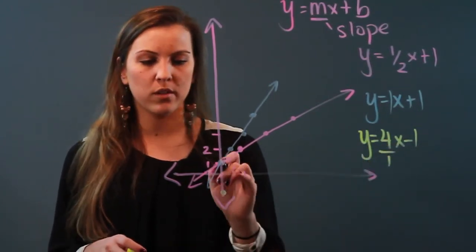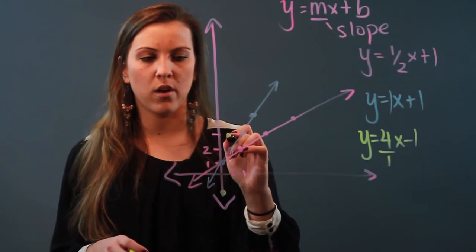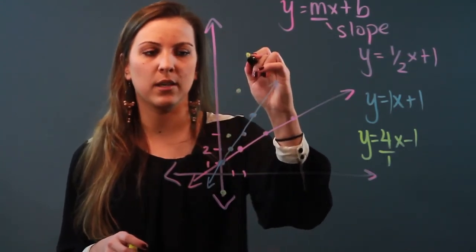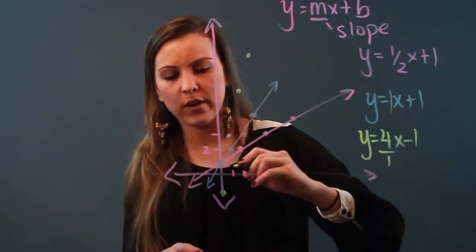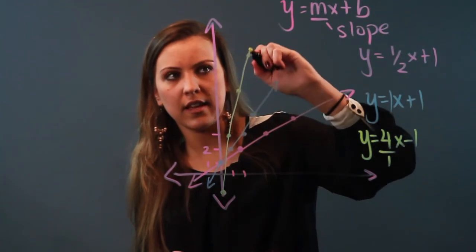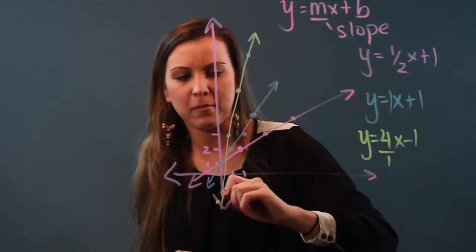I'm going one, two, three, four up one; one, two, three, four up one; one, two, three, four up one. I'm estimating, obviously. So y equals 4x minus one looks something like that, except it's straight, not like mine.